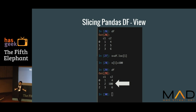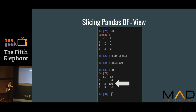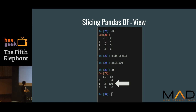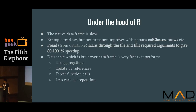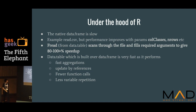Copy is an expensive operation. So if you're slicing and asking for some data from homogeneous columns, it just gives you the reference. And now when you make certain changes, it's going to reflect in your original data frame.